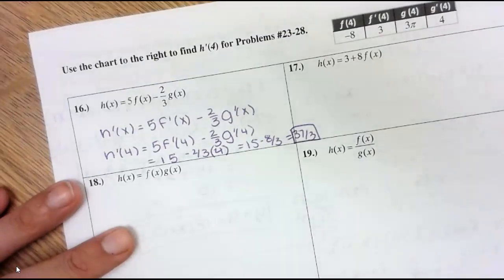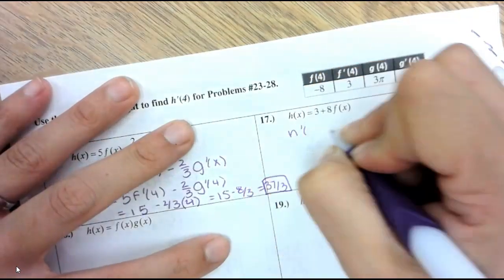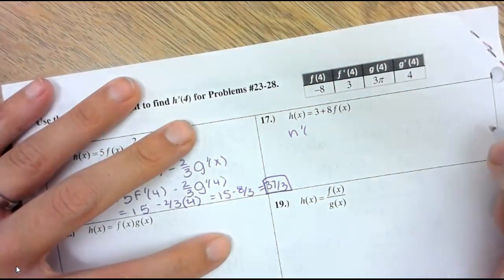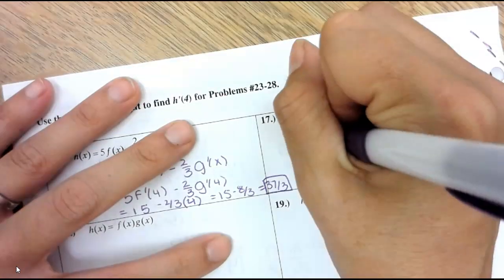I got 24. Because, I know what you did, the derivative of 3 is 0. You didn't make the derivative of 3 equal 0. Yeah, as soon as I looked at it.